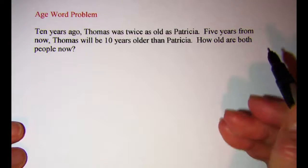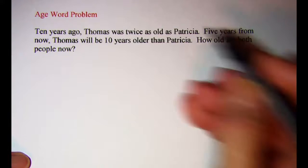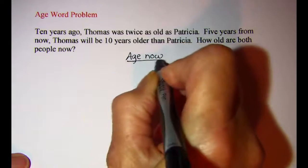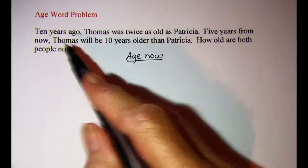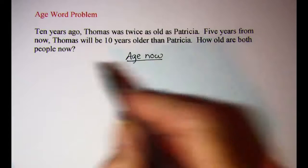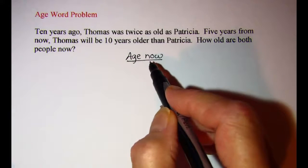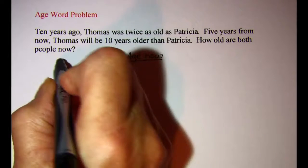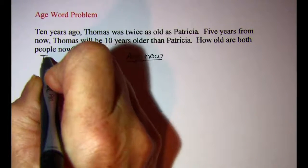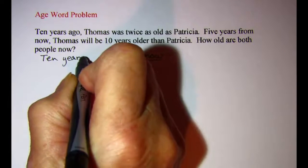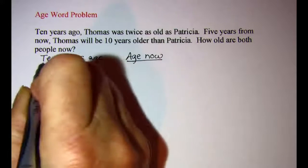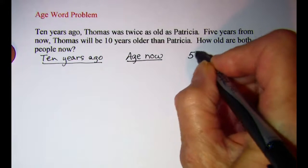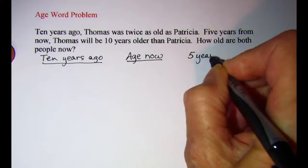Whenever I have to solve a word problem that's dealing with age, I set up a chart that indicates their ages at each of these time intervals. So we're wanting to know how old are both people now, so you have the age now at that column. And then I have ten years ago, so I'm going to set up a column that's labeled ten years ago. And then I also have five years from now, so I'll set up a column that's labeled five years from now.